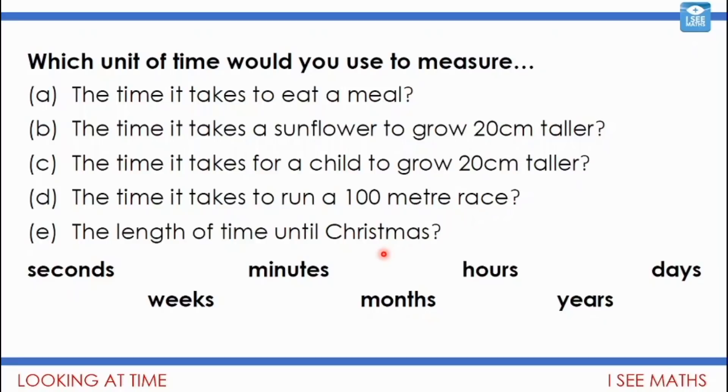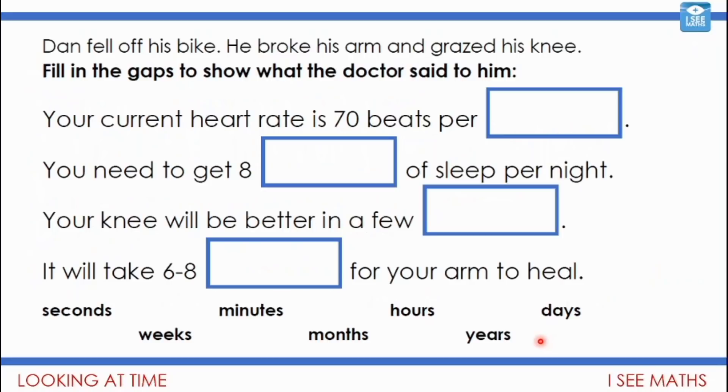Have a think about this example. Dan fell off his bike, broke his arm and grazed his knee. Fill in the gaps to show what the doctor said to him. Think about the units of time that the doctor will have used here. Pause the video and have a go at these ones.